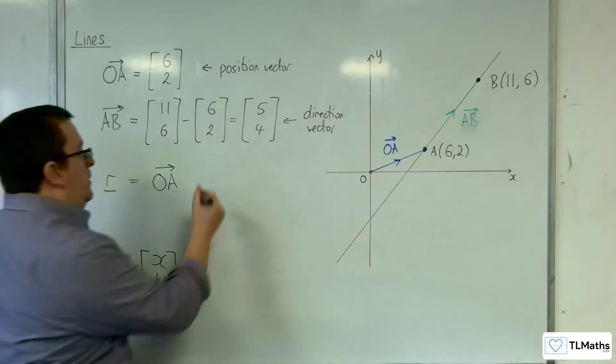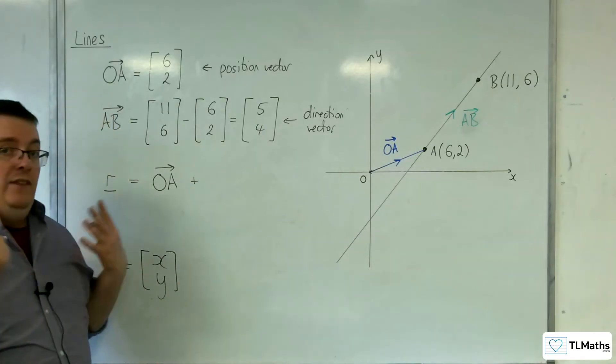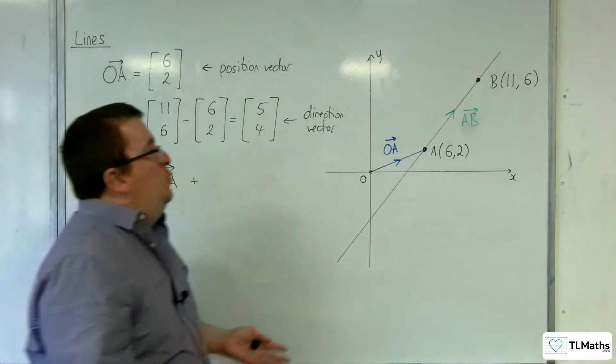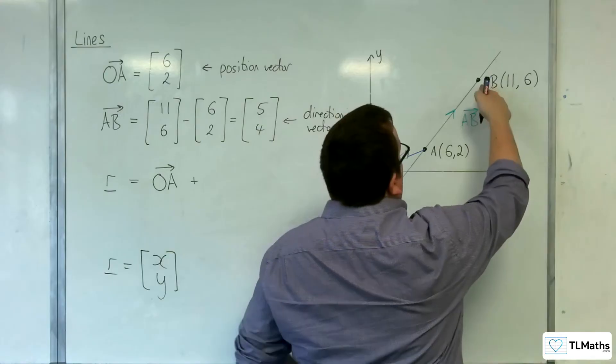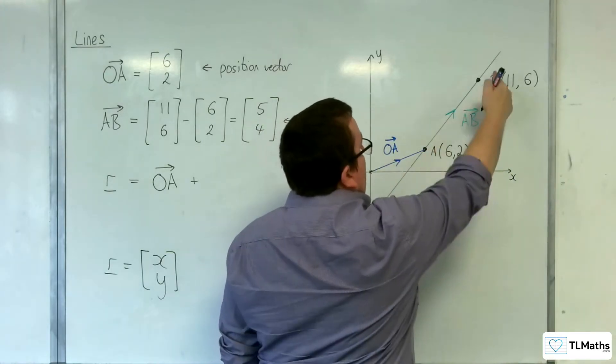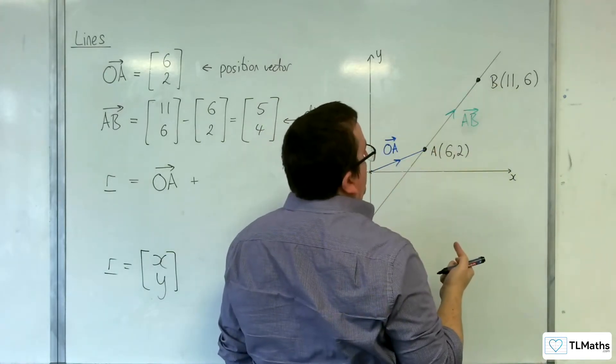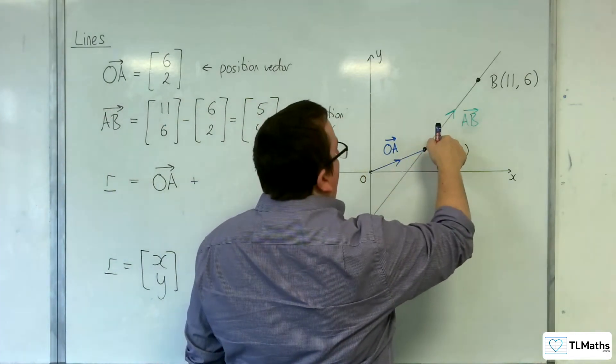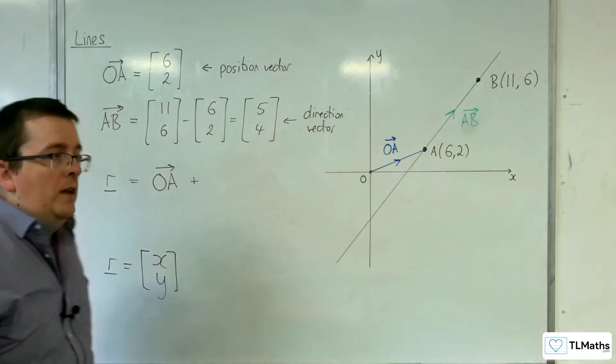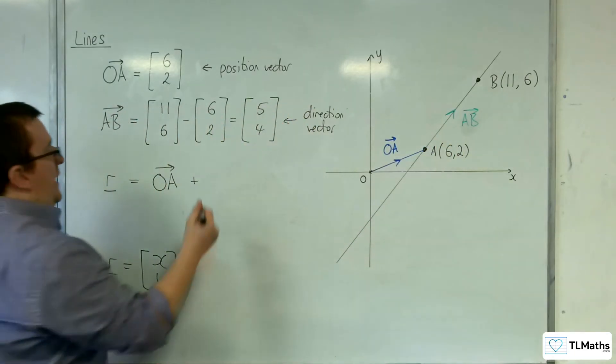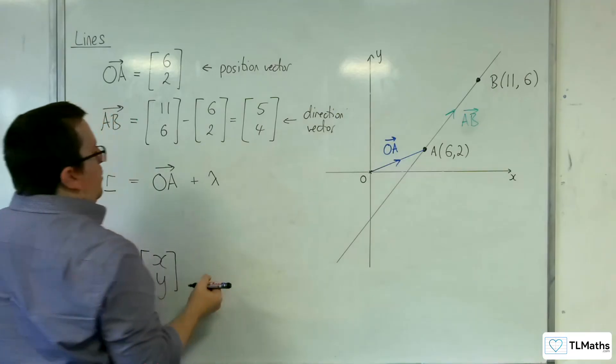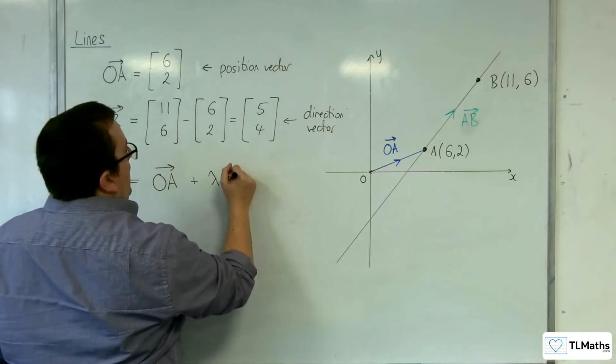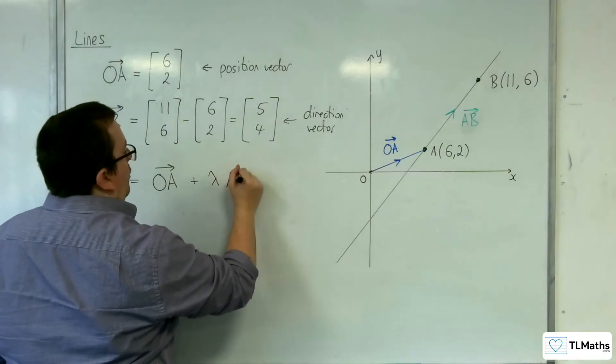And then I need to travel in the direction AB by a certain amount. So if you want to get to (11, 6) for example, then I need one lot of AB. If I want to get here, I might need 0.2 lots of AB. So I need some multiple of AB, and that multiple we will use lambda, the Greek letter lambda. That would be some multiple of AB.